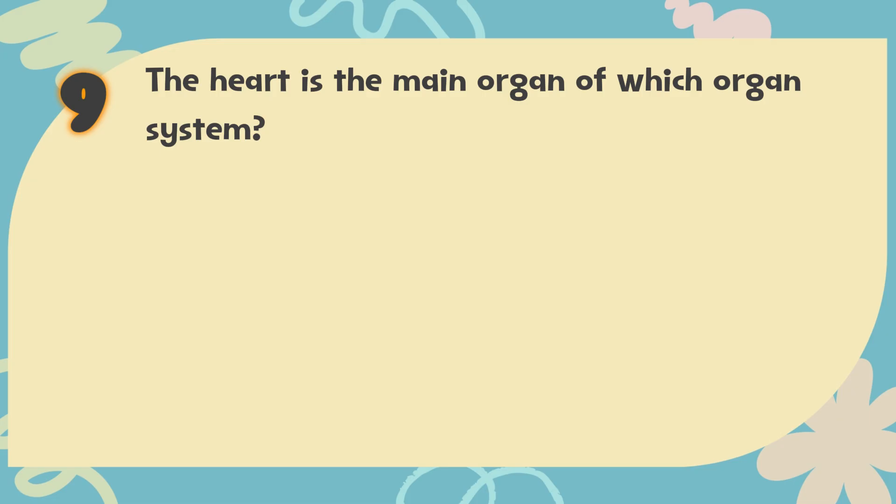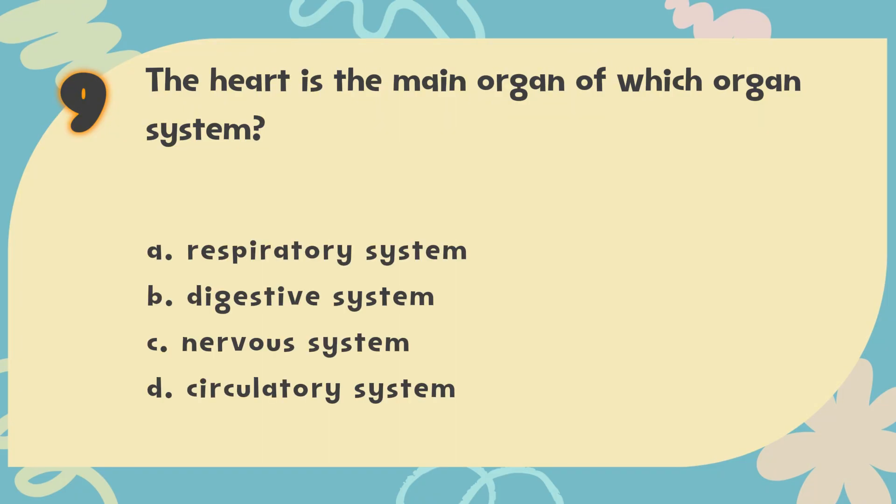Number 9. The heart is the main organ of which organ system? The choices are: A. Respiratory system, B. Digestive system, C. Nervous system, D. Circulatory system.